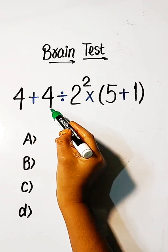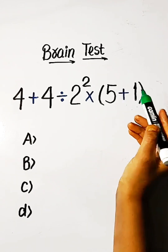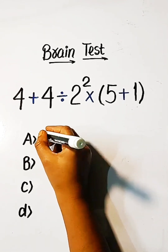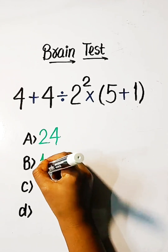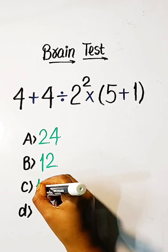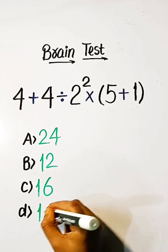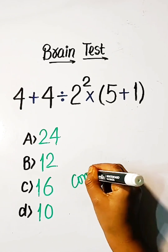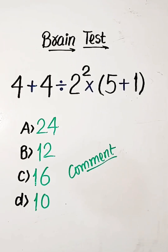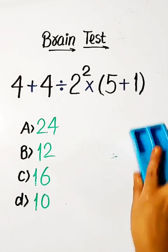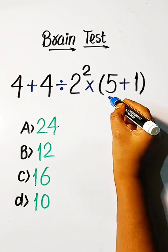4 plus 4 divided by 2 squared into 5 plus 1 equals 2 — what is the answer? Option A: 24, Option B: 12, Option C: 16, Option D: 10. Comment your answer. Now it's time to solve this problem.